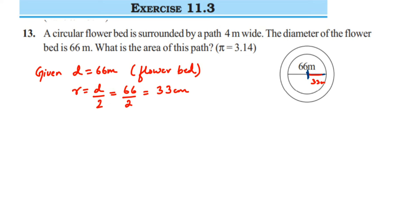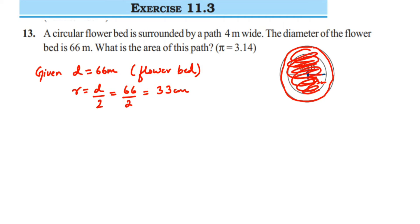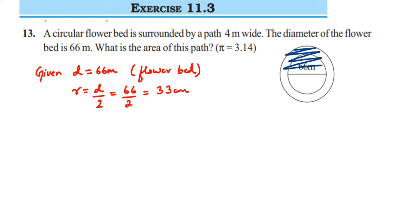To find only the path area, we are going to first find the area of the outer circle — the flower bed including the path — and from that we will subtract the area of the flower bed alone. Once we subtract, we will get the area of the path.